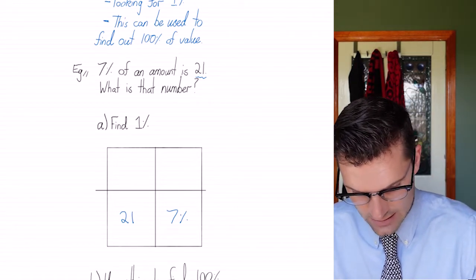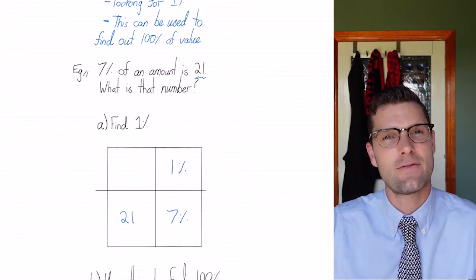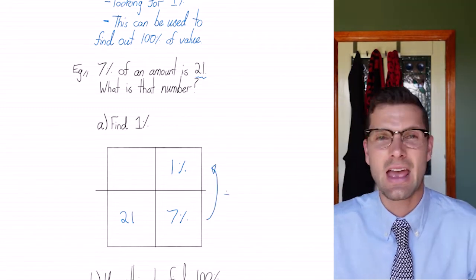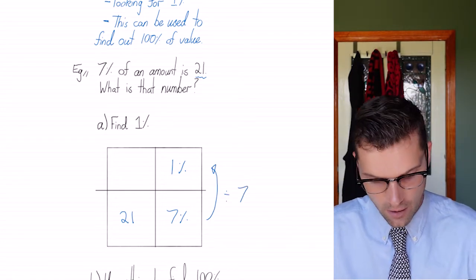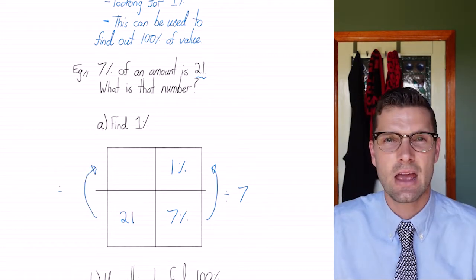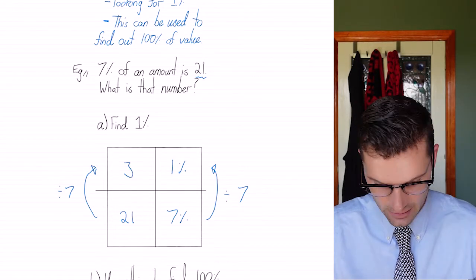So if I've got this seven percent, I need to find what one percent is, and I can easily get from seven to one using division. So over here, I'm gonna divide by seven. If that's what I do to one side, I've got to do it to the other side. So I'm dividing this side by seven, which means that one percent of my total value is three.